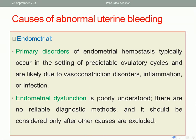Regarding the endometrial factor: primary disorders of endometrial hemostasis typically occur in predictable ovulatory cycles and are likely due to vasoconstriction disorders, inflammation, or infection. Endometrial dysfunction is poorly understood, there are no reliable diagnostic methods, and it should be considered only after other causes are excluded.